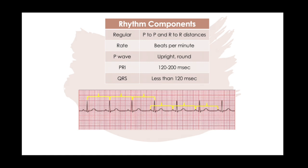Your rate is the beats per minute. Remember there's an electrical rate and a mechanical rate — just because you have an EKG does not mean you have a pulse. Electrical activity without a pulse is called pulseless electrical activity, a form of cardiac arrest. For all of these, we're going to assume there's a heart rate and we're just interpreting the EKG itself. The P wave should be upright and rounded, indicating it's coming from the SA node, the normal pacemaker for the heart. The PR interval should be between three and five small blocks — that's 120 to 200 milliseconds. The QRS should be under 120 milliseconds.